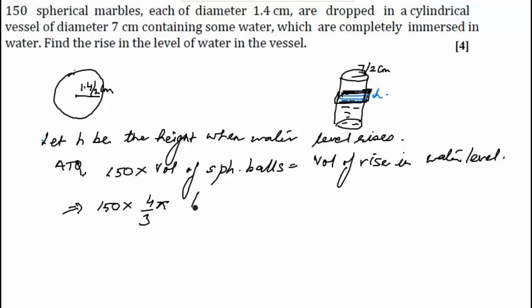Pi r cube, which is 1.4 by 2 cubed—sorry, not square, cube. That is the volume of rising water level, so volume of cylinder is pi r squared h. That will be pi times 7 by 2 squared into h, which we need to find out.